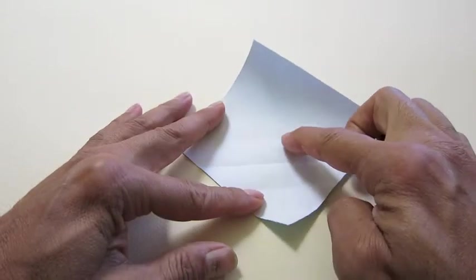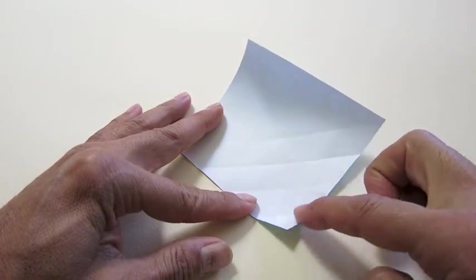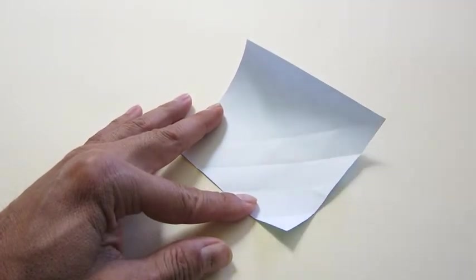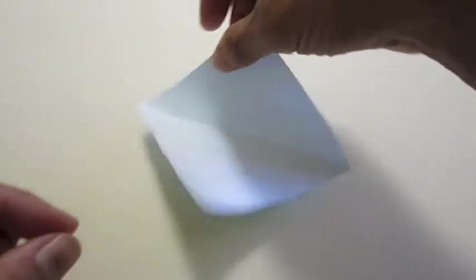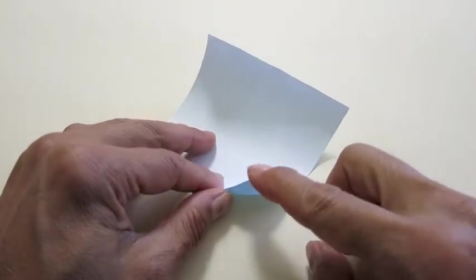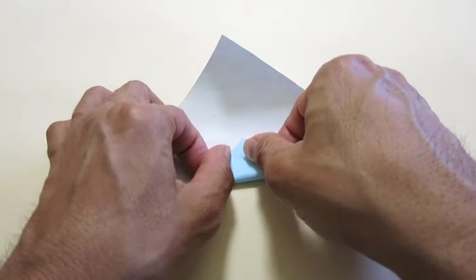So you have one valley, two, three, four, and then do the other half. Again the part. Do you have one valley, two, three, four?